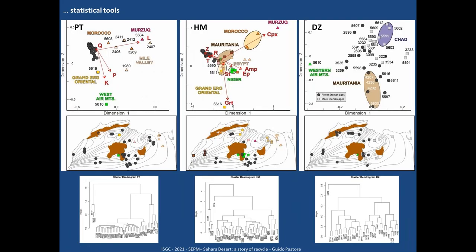To work with this multi-dataset with many variables, we applied multi-dimensional scaling, observing pairwise similarities across our dataset. For petrography, heavy minerals, and zircon we can see the dissimilarities and construct hierarchical tree clustering to obtain clusters by rigorous rules. The same samples enriched in quartz are contoured together, confirming these samples are mainly influenced by multi-stage recycling.